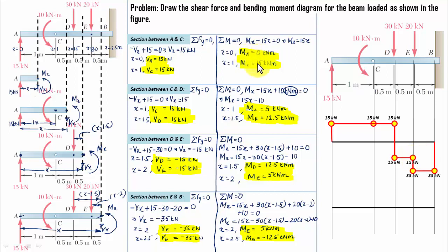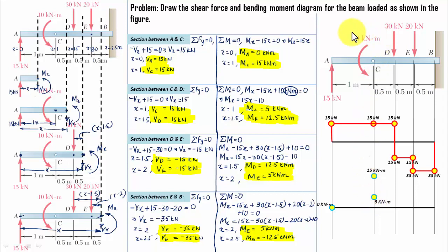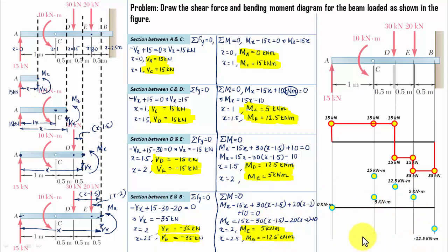For the bending moment diagram: MA equals 0, MC equals 15 kNm, then just after C it drops to 5 kNm due to the applied couple of 10 kNm at C — note that 15 minus 5 equals 10, which is the value of the couple. Then MD equals 12.5 kNm, ME equals 5 kNm, then just after E it remains 5, and MB equals minus 12.5 kNm. Joining all these points gives the bending moment diagram.